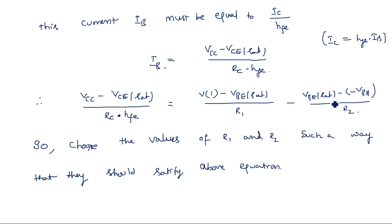We need to choose the values of R1 and R2 such that they satisfy this balancing equation. The values of VCE(sat) and VBE(sat) depend on the type of transistor — silicon or germanium — with different values for each. In this way we can design the parameters of a transistor switch, where the primary design factors are R1 and R2.